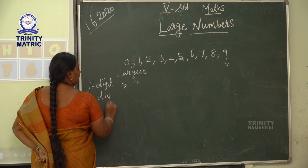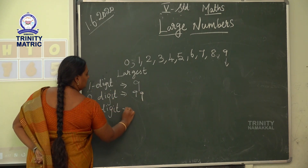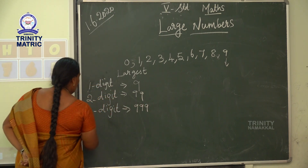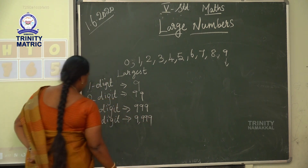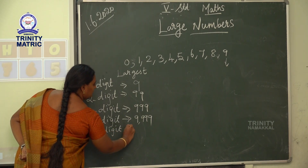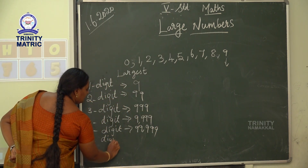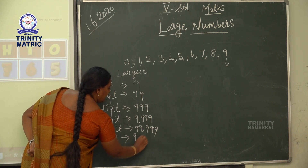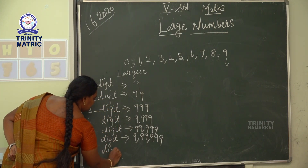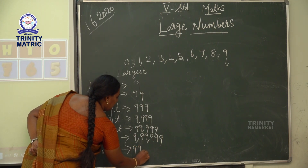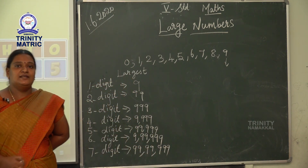The largest two-digit number is 99. The largest three-digit number is 999. The largest four-digit number is 9,999. The largest five-digit number is 99,999. The largest six-digit number is 9,99,999. The largest seven-digit number is 99,99,999. So up to 7 digits we are going to study in this topic.